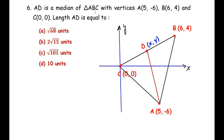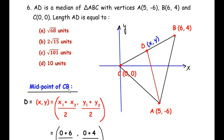AD is given as the median of triangle ABC, so we draw a line AD where D connects to side BC. Since AD acts as a median, D divides side BC into two equal halves. We consider the coordinates of D as (x, y), which can be found using the midpoint formula since D is the midpoint of BC.